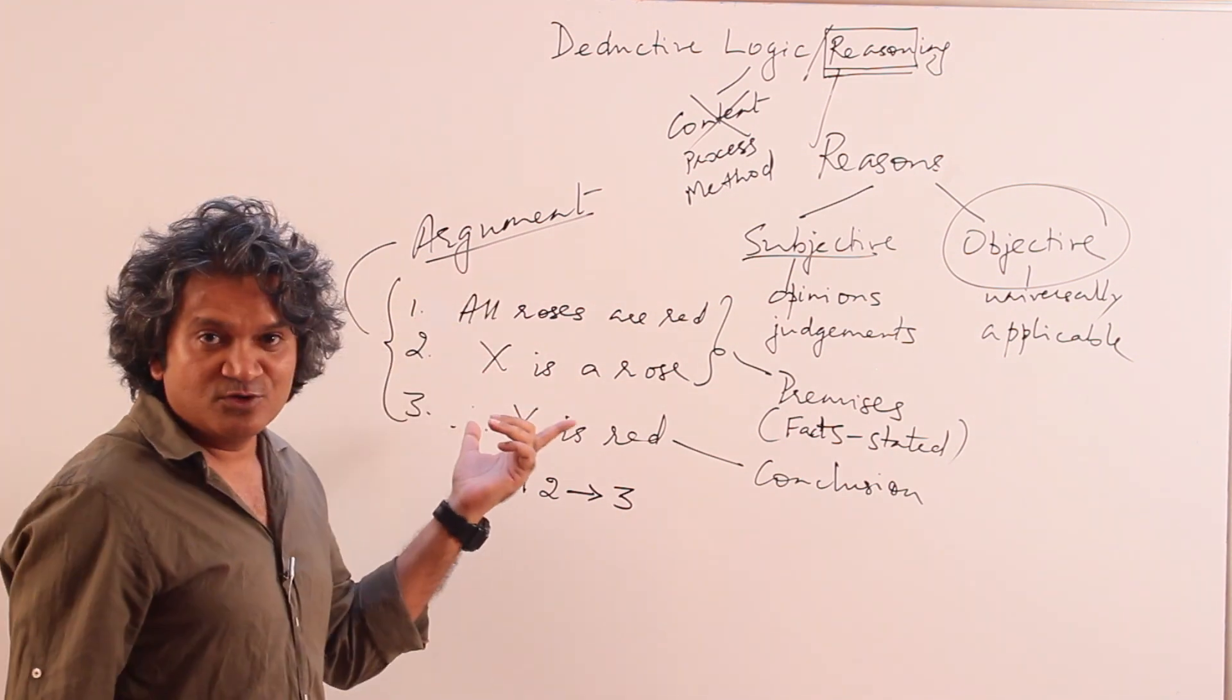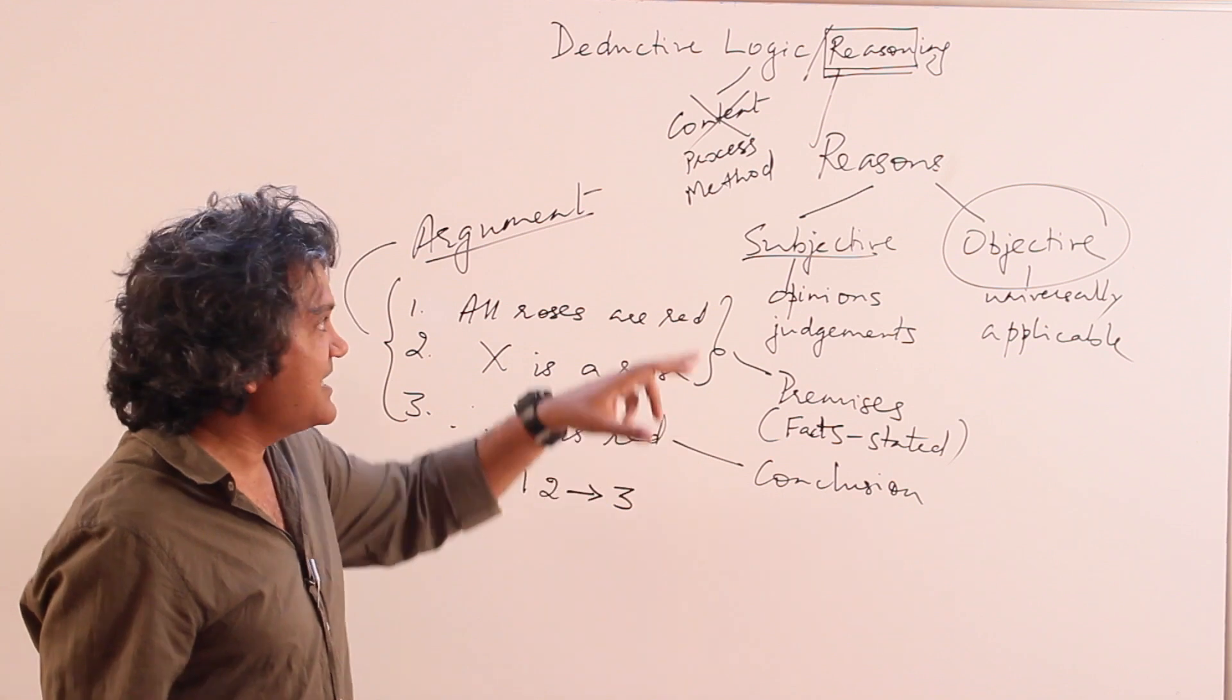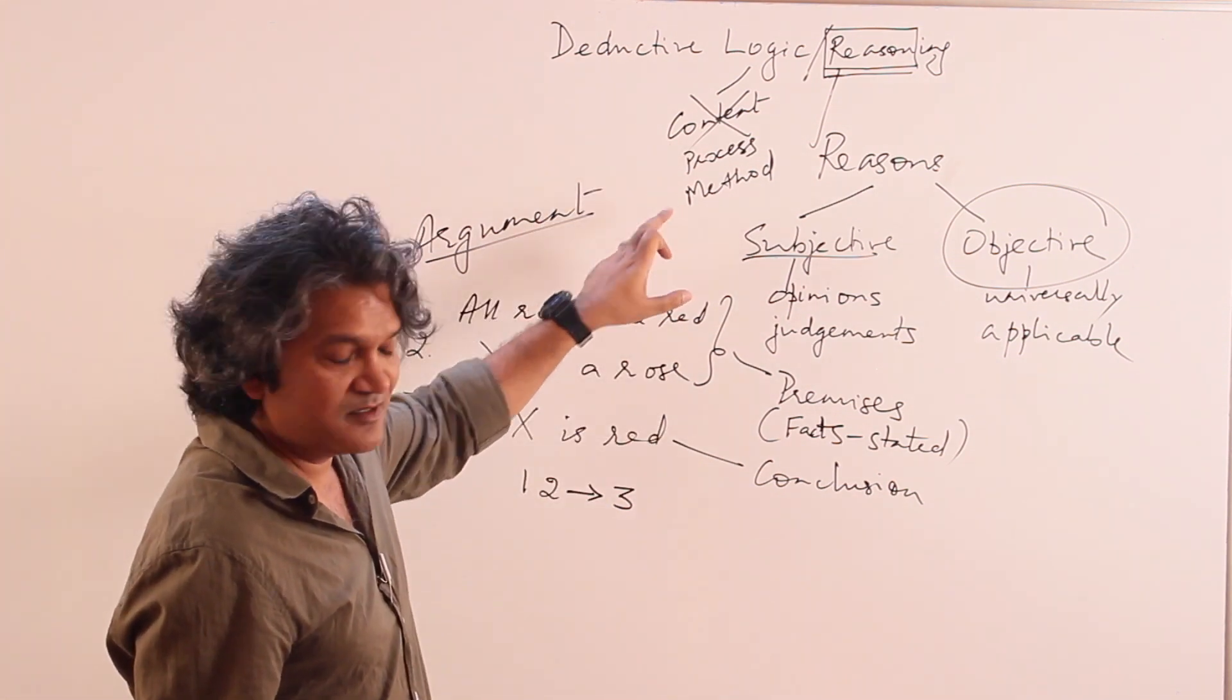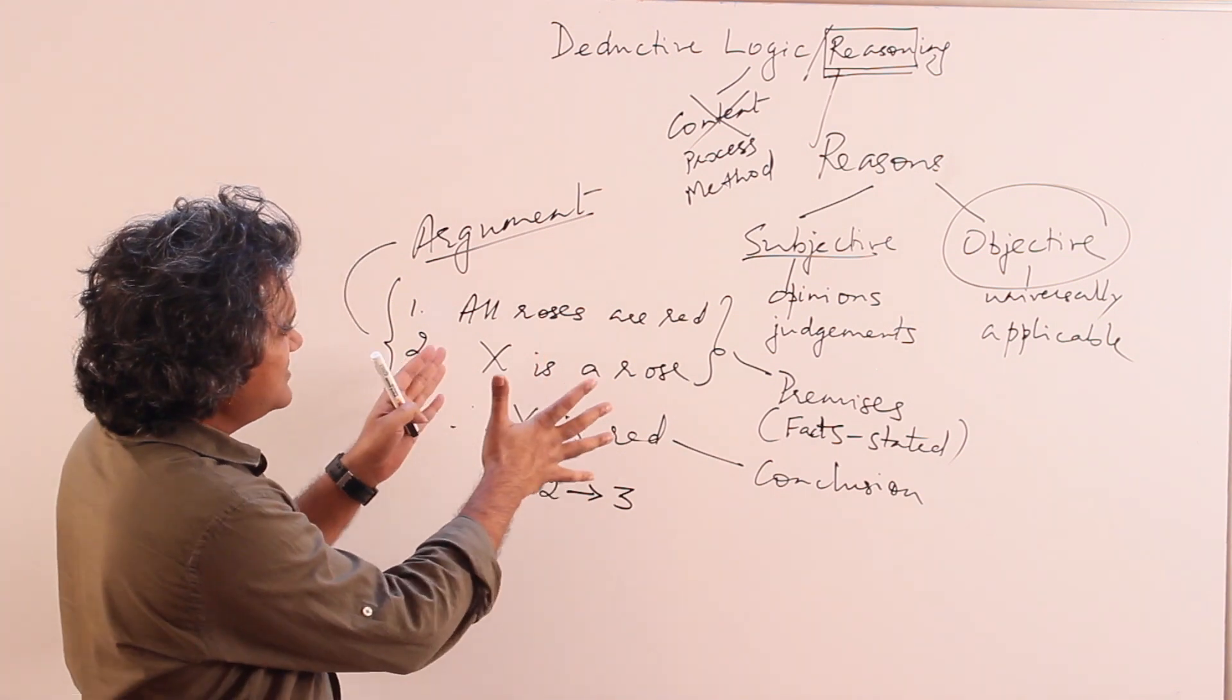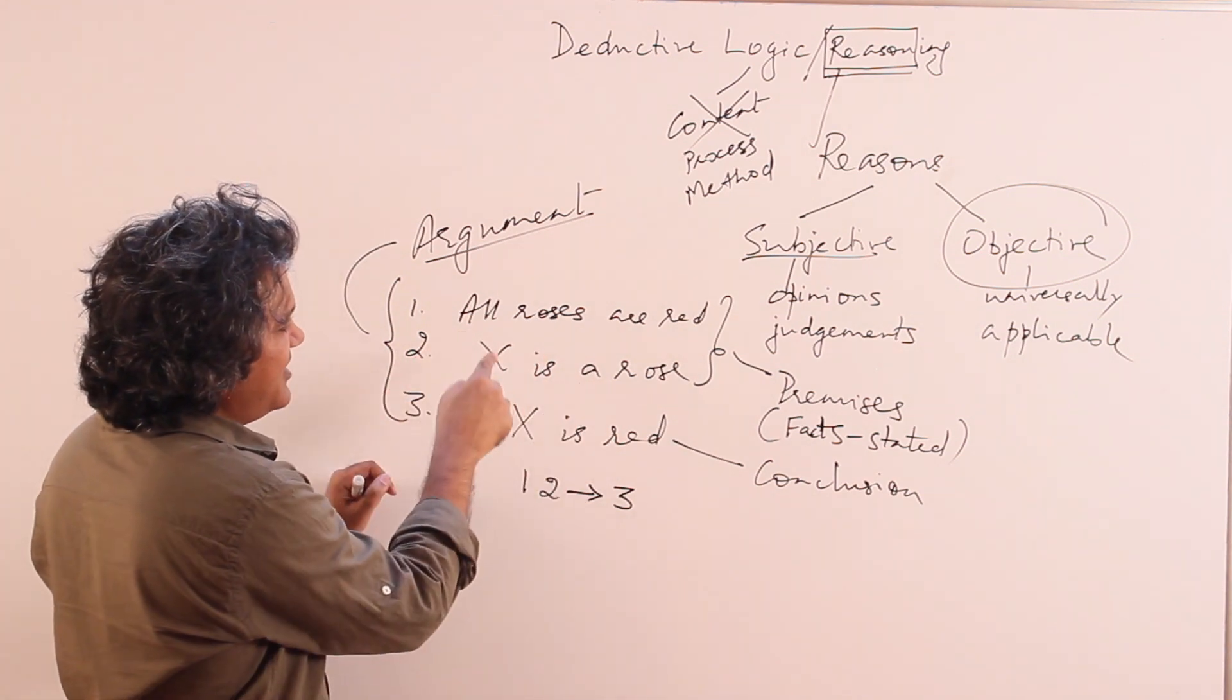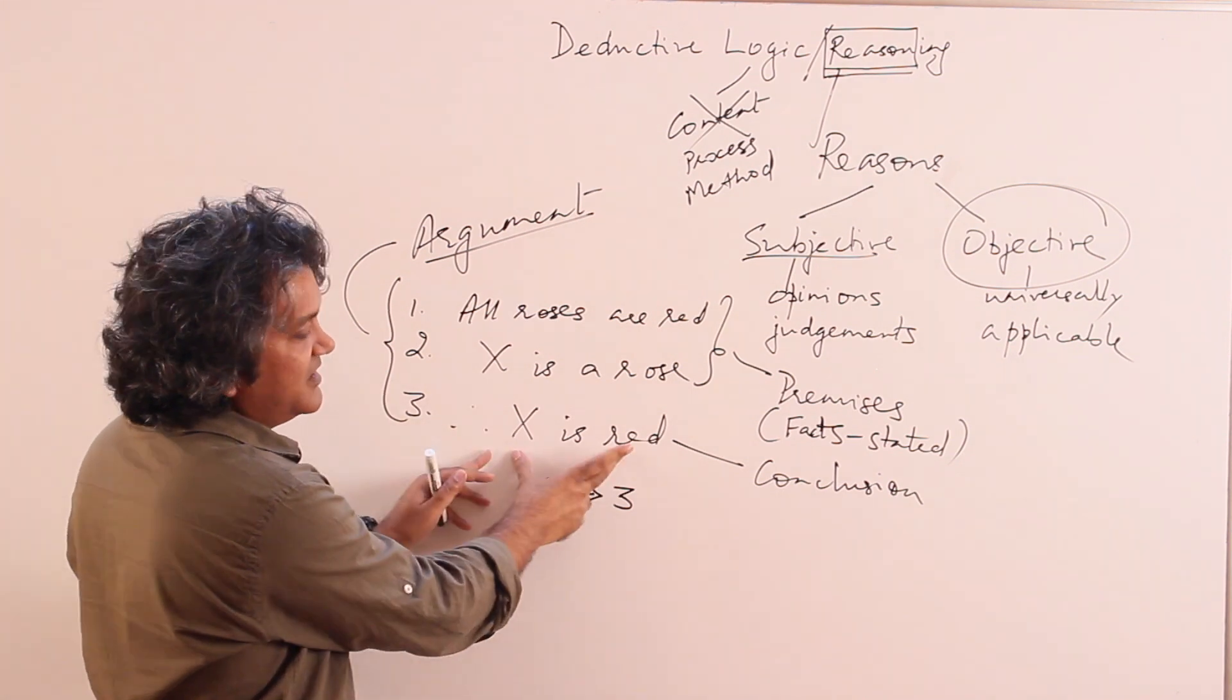Now you are not allowed to touch this in logic. As I said, it is not interested in content. It is interested in the method. Basically what logic is interested in is if one was true and if two was true, would three follow or not.